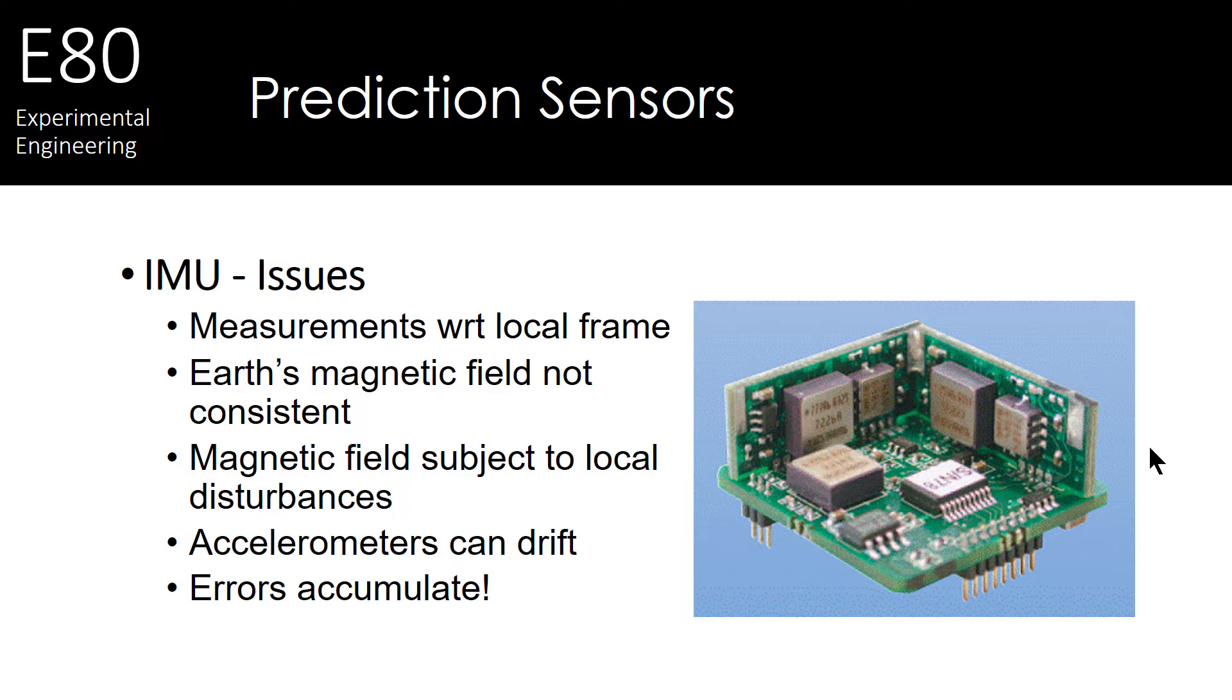As well, the Earth's magnetic field is certainly not consistent. In fact, it can be easily corrupted by putting large metal objects all around. You get a large drift. All your accelerometer measurements can actually drift over time. This will lead to accumulations and errors.